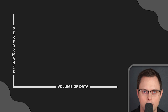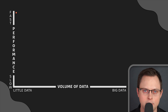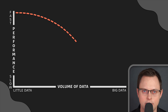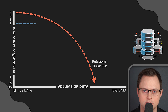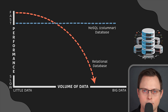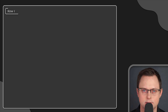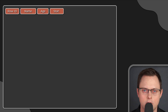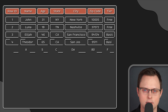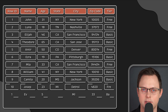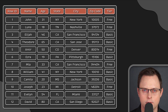Traditional databases do not scale very well. If you have a lot of data, like billions of records, traditional databases can be slow. To improve query performance with big data, columnar databases have been developed. To illustrate this, I'm going to use a spreadsheet populated with some customer data. First, let's see how a traditional database works — there is a rule we need to follow: we have to read the data from left to right, starting from the beginning of each row and proceed from row to row, kind of like reading a book.